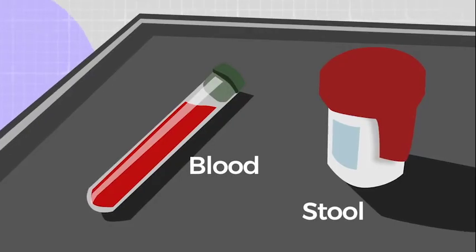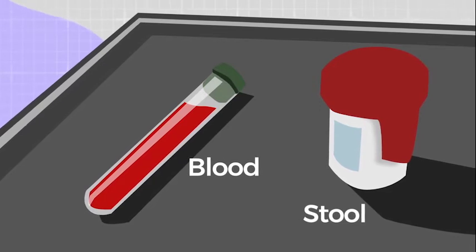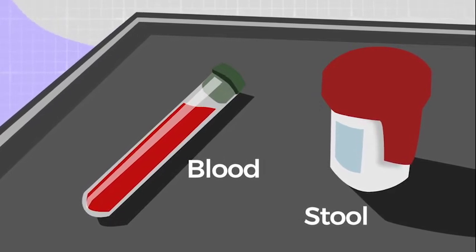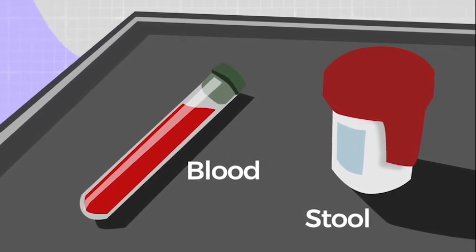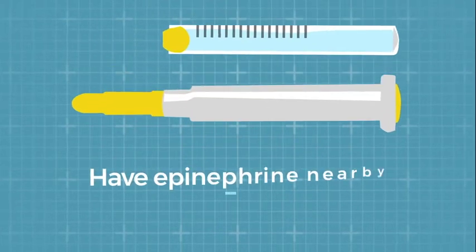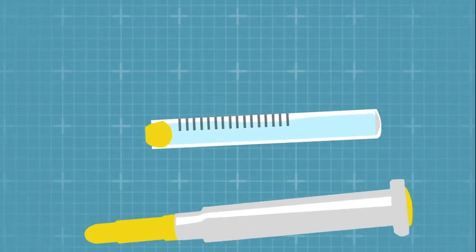Take blood, stool and any other samples for botulism testing before antitoxin is administered to ensure accurate test results. Have epinephrine nearby in case of a hypersensitivity reaction. An illustration of a vial of blood, a specimen cup and an epinephrine pen appear on screen.